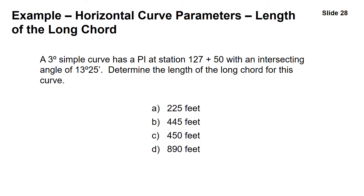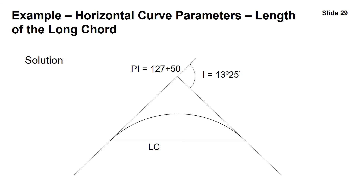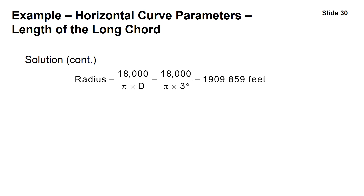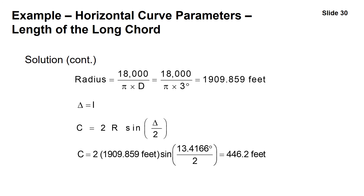For the long chord, the straight line connecting the PC and PT, we use C equals 2 times R times the sine of delta divided by 2. With R equals 1909.859 feet and delta equals 13.4166 degrees: 2 times 1909.859 times the sine of 13.4166 divided by 2 gives a long chord length of 446.2 feet — answer B.